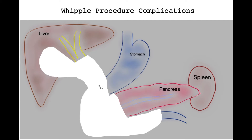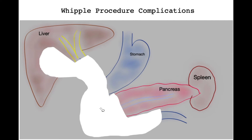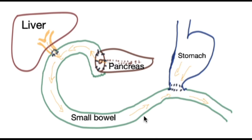We are left with the cut end of the bile tube, cut end of the stomach, and of the pancreas. The biggest risk intraoperatively is blood loss. This depends upon the complexity of the operation, the condition of the patient, and the experience of the surgical team. Other risks include those related to the anesthetic and previous cardiac and chest history.